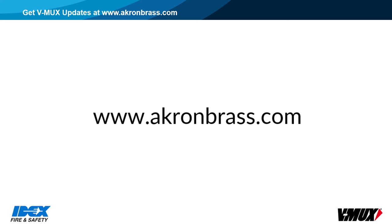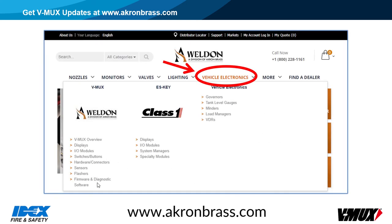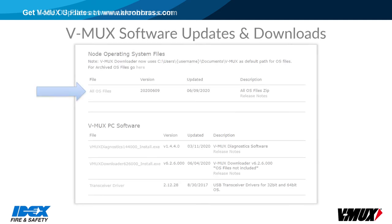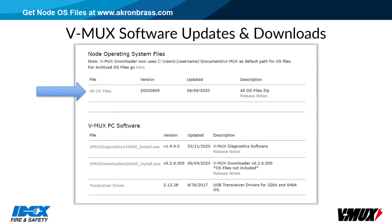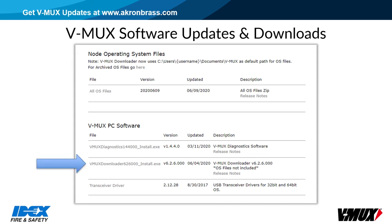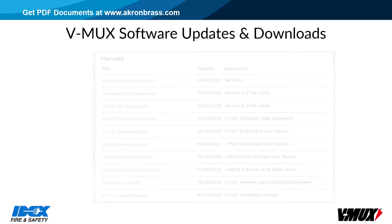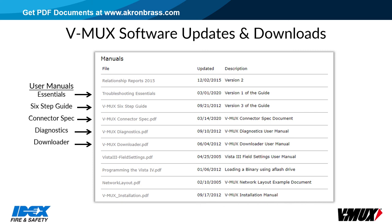Visit our website at www.akronbrass.com and click on the vehicle electronics tab. This will open a box where you can see all the Weldon and Class 1 links. Click the link for firmware and diagnostic software at the bottom of the list under the Weldon logo. Node operating system files are near the top of the page. Download the zip file, extract all, and copy the OS files to the VMux folder under My Documents — this folder gets created when the downloader program is installed. Scroll down the page to find the installation files for VMux downloader, diagnostics, and the transceiver driver file. The latest driver file can also be found at ftdichip.com. Several PDF documents are available, including the six-step guide, plus downloader and diagnostics manuals.